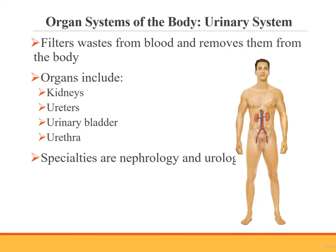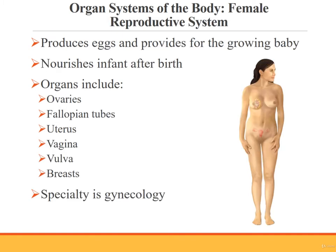The urinary system filters waste products out of the blood and removes them from the body. Organs of the urinary system include the kidneys, ureters, urinary bladder, and urethra. Nephrologists care for the urinary system, as do urologists. The female reproductive system produces eggs for reproduction, provides a place for the growing baby, and nourishes the infant after it's born. Organs of the female reproductive system include the ovaries, fallopian tubes, uterus, vagina, vulva, and breasts. Gynecologists care for the female reproductive system. Obstetricians also provide care, typically during pregnancy.